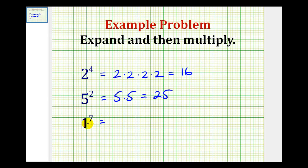Then for one to the seventh, we're going to have seven factors of one. But regardless of how many factors of one we have, one times itself is always equal to one.